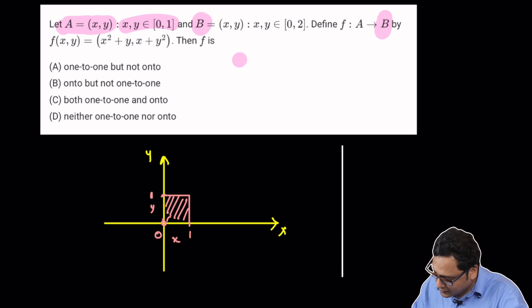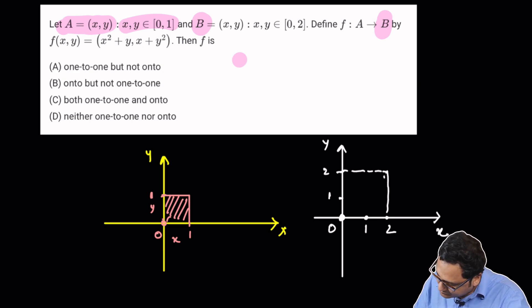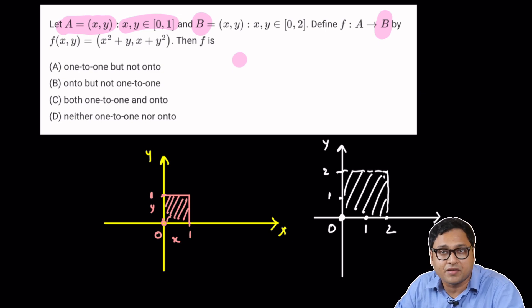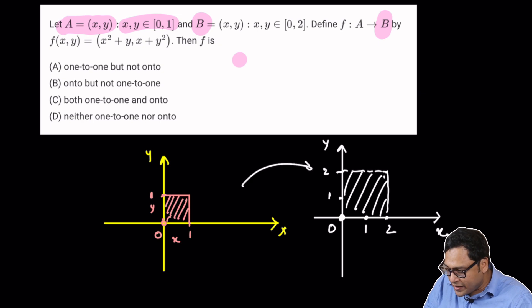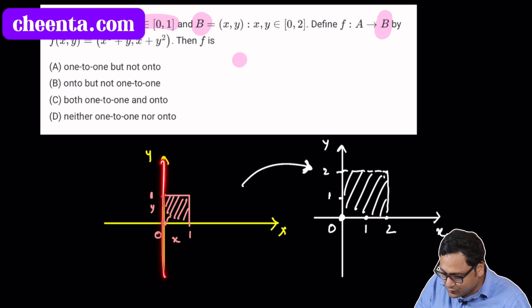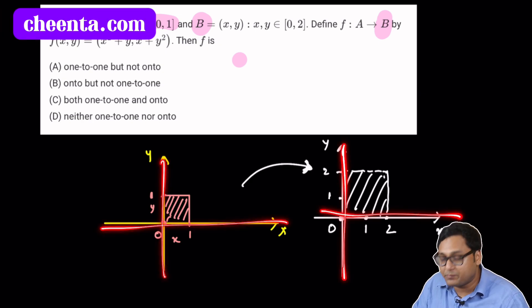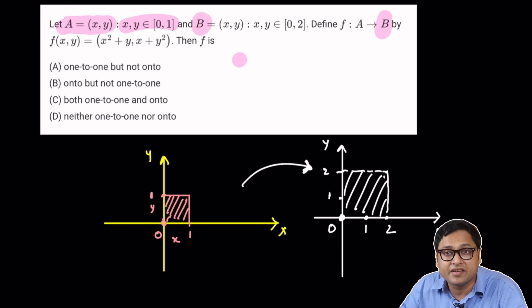So if I just draw x-axis and y-axis. So this is again 0, this is 1, this is 2, this is 1, this is 2. So this box, this bigger box is the co-domain of the function. So that's great. So there's a function taking points from this x, y plane to this x, y plane. So this is a multi-variable function.